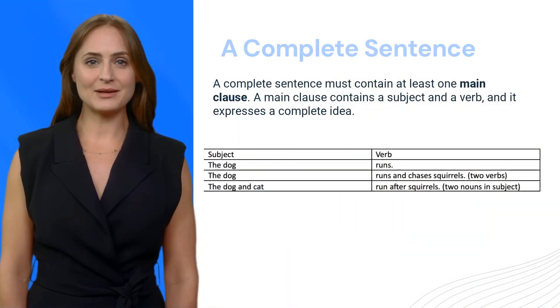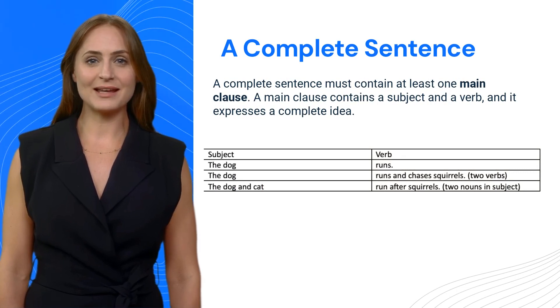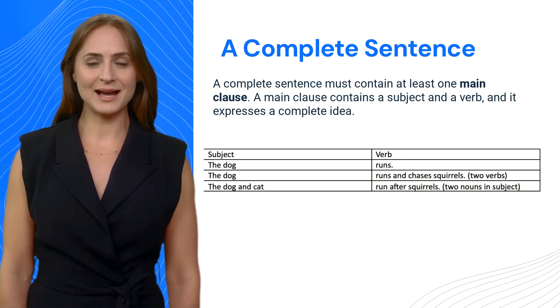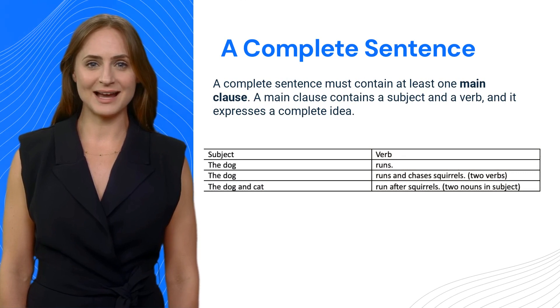A complete sentence must contain at least one main clause. A main clause contains a subject and a verb, and it expresses a complete idea.